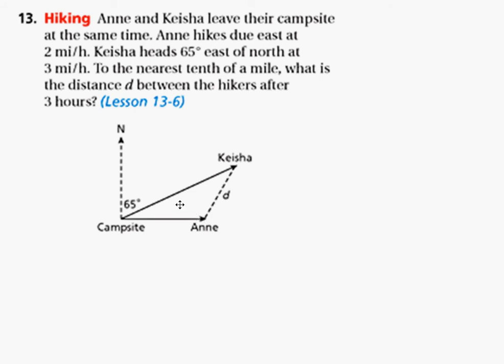Anne hikes due east at 2 miles an hour. Keisha heads 65 degrees east of north at 3 miles an hour. To the nearest tenth of a mile, what is the distance between the hikers after 3 hours?